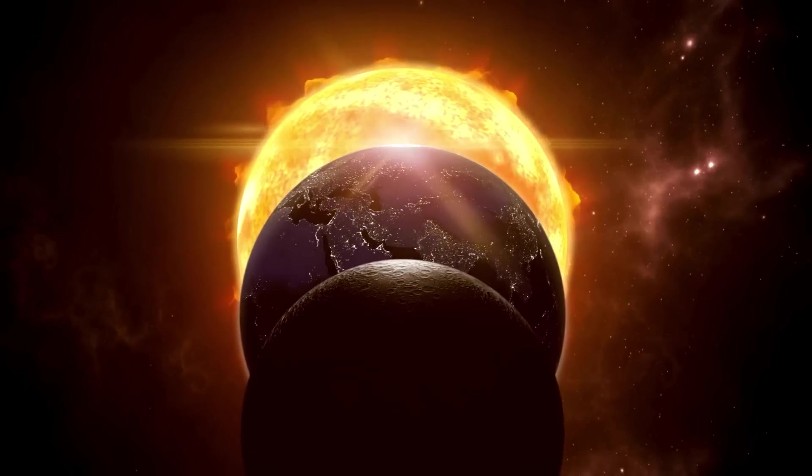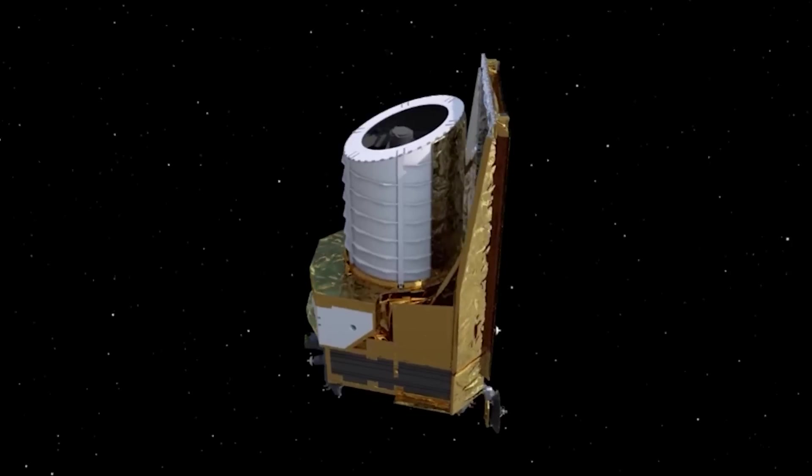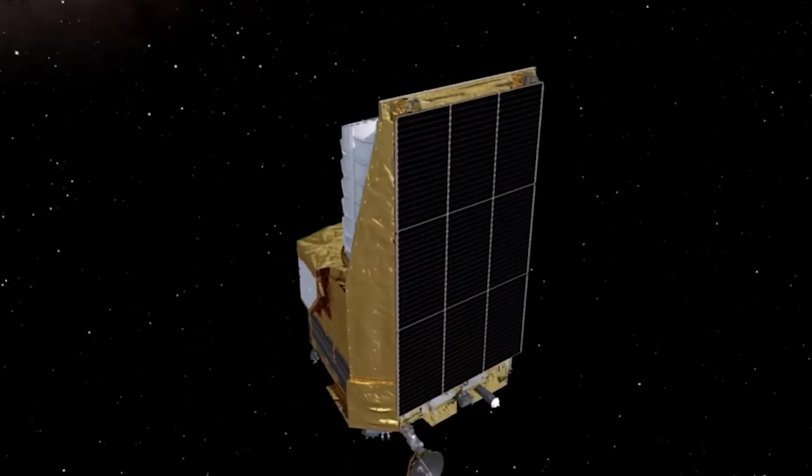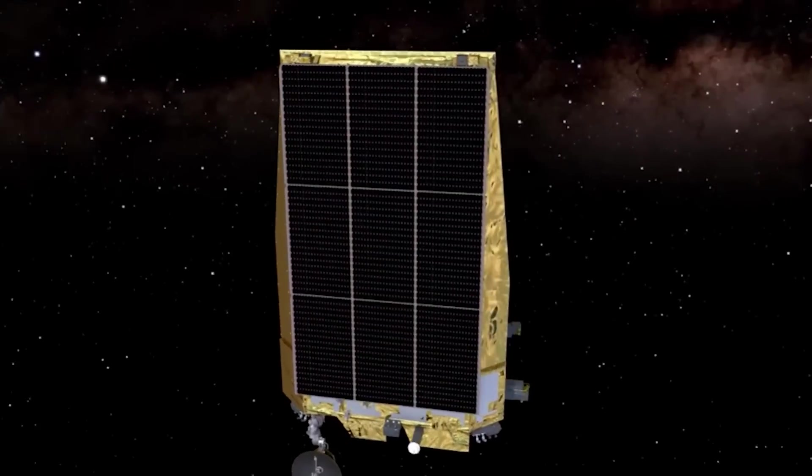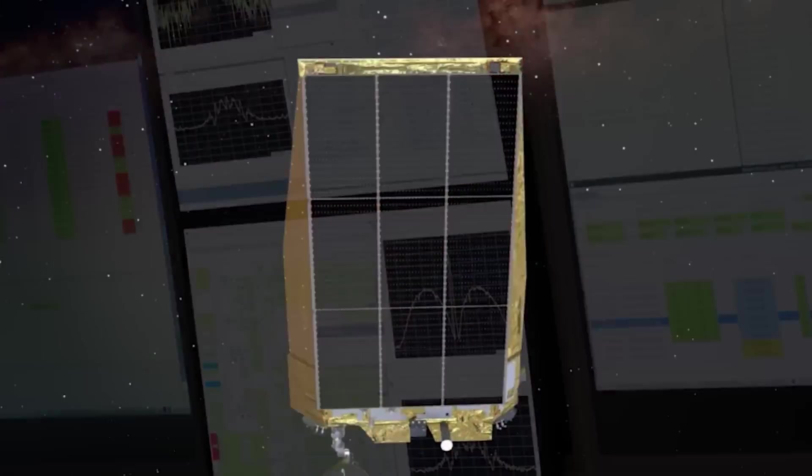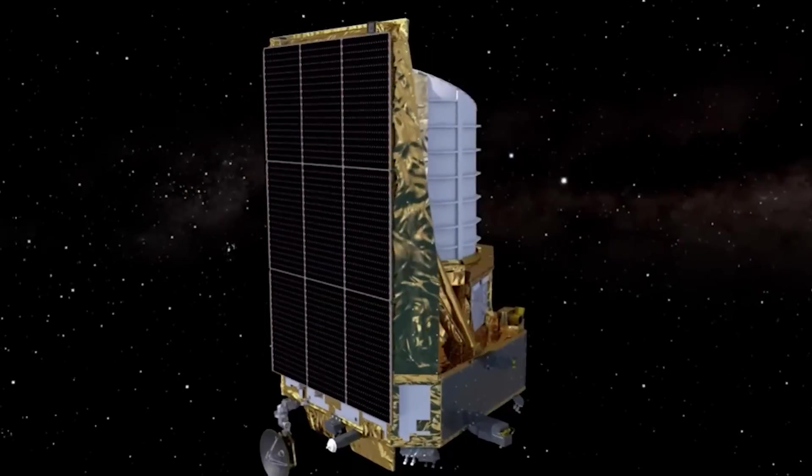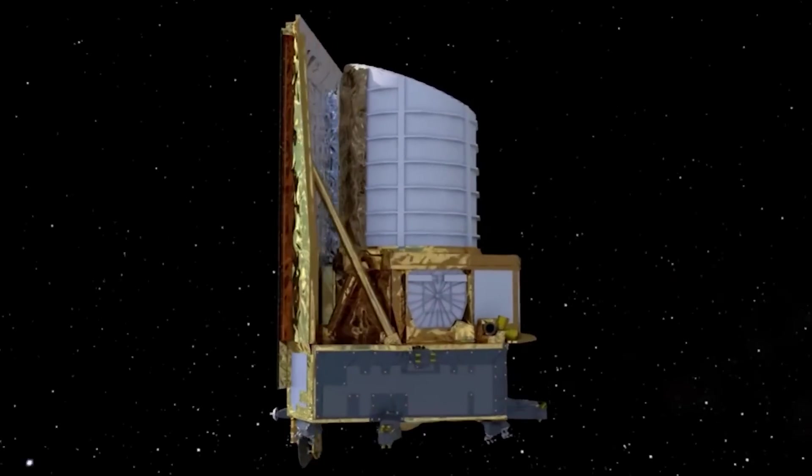With the Sun, Moon, and Earth blocked from its view, Euclid can gather invaluable data that was previously difficult to obtain. After conducting some tests for three months, the telescope will commence its mission of collecting data and uncovering the mysteries of the universe.